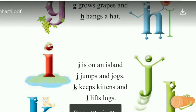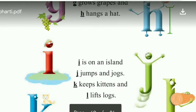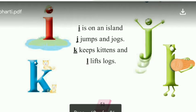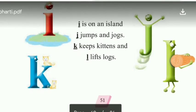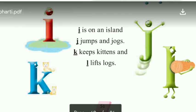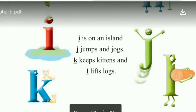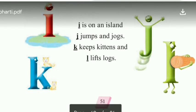I is on an island. Letter I kya kar raha hai, island mein hai. J jumps and jogs. Letter J jump bhi kar raha hai, jogging bhi kar raha hai. K keeps kittens. Letter K kya kar raha hai, kittens ko rakh raha hai. Kitten ham billi ke bacho ko bolte hai. And L lifts logs. Letter L ne kya kiya hai, log uthaya hai. Log kis ko bolte hai, jo bahut moti lakdi hoti hai, usse ham log bolte hai.